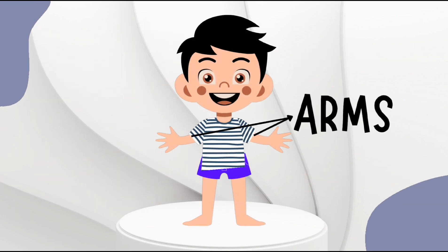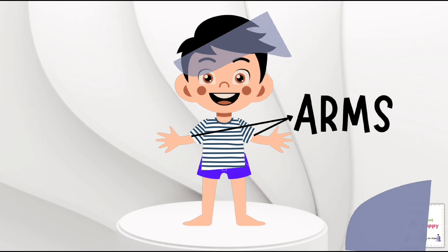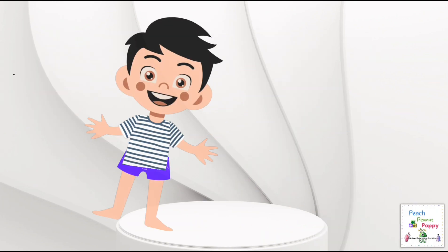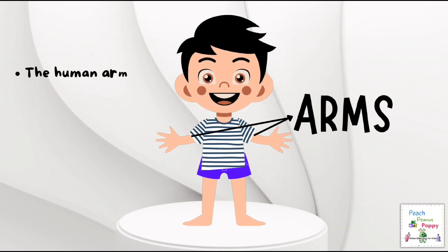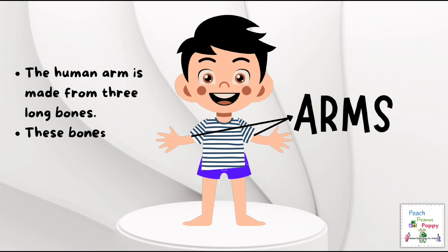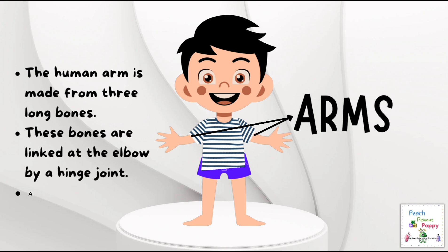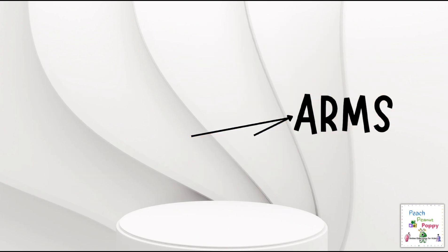Next are the arms. The human arm is made from three long bones. These bones are linked at the elbow by a hinge joint. The arm is a limb.